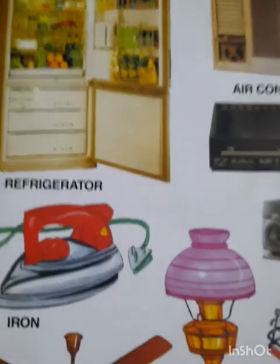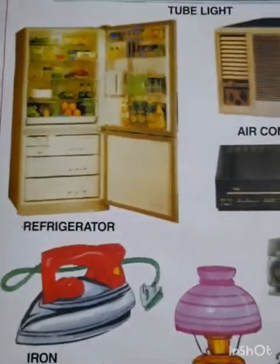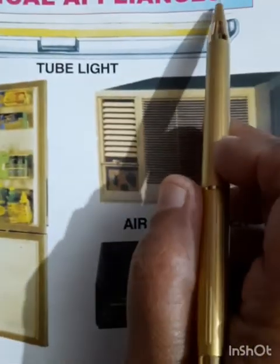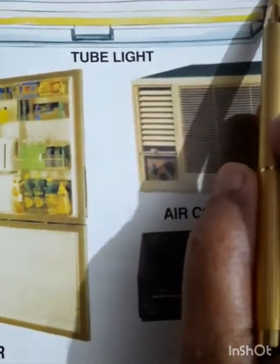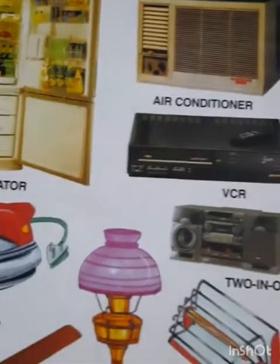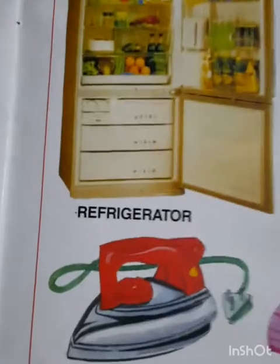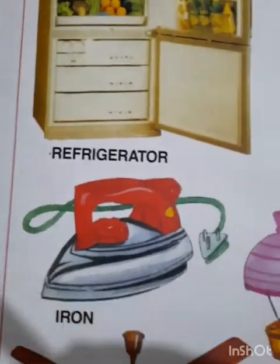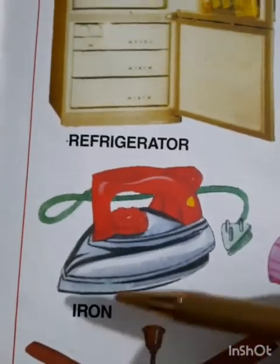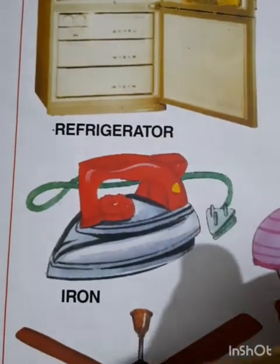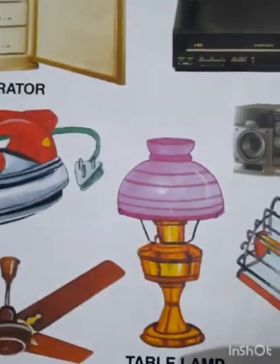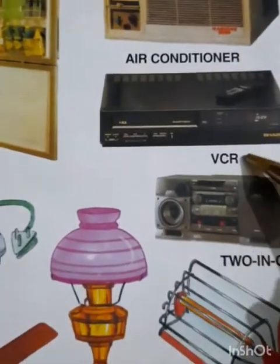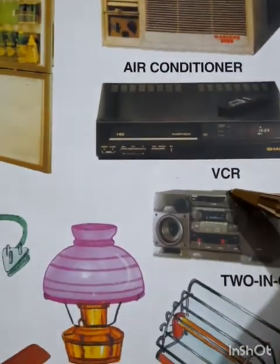Children, this is our new lesson and today's topic is electrical appliances, Part 1. Listen carefully to how I am pronouncing the names: fan, iron, refrigerator, VCR, air conditioner.